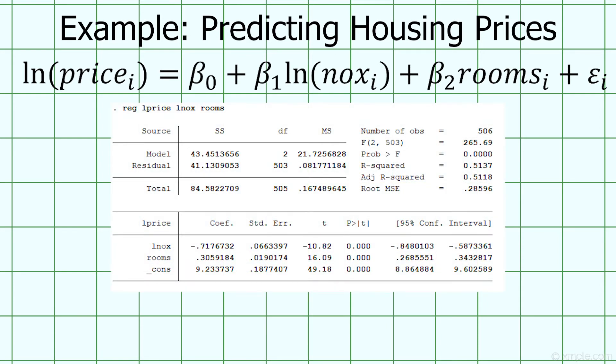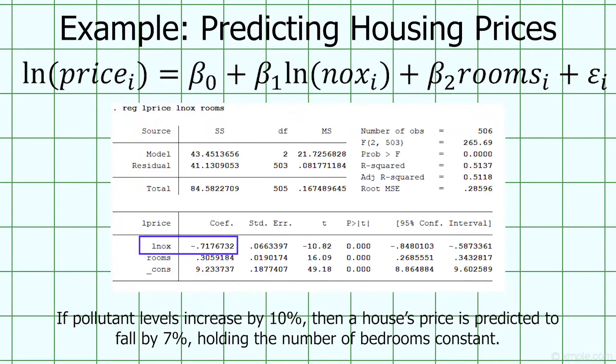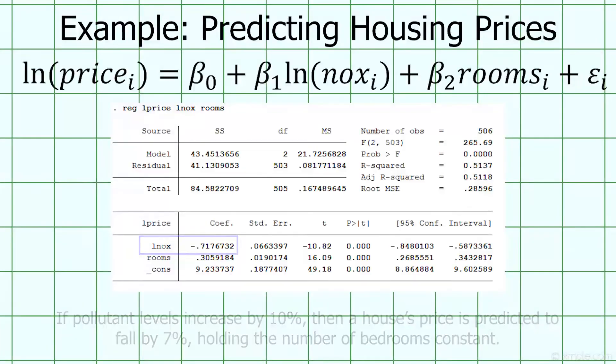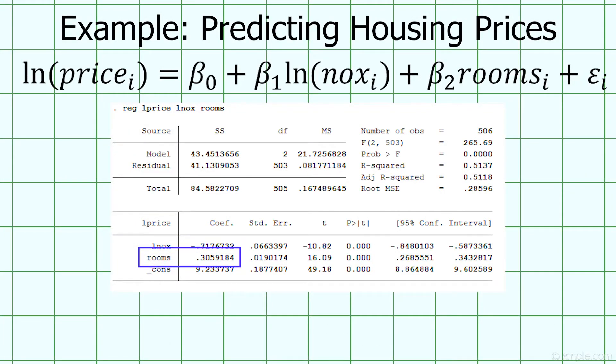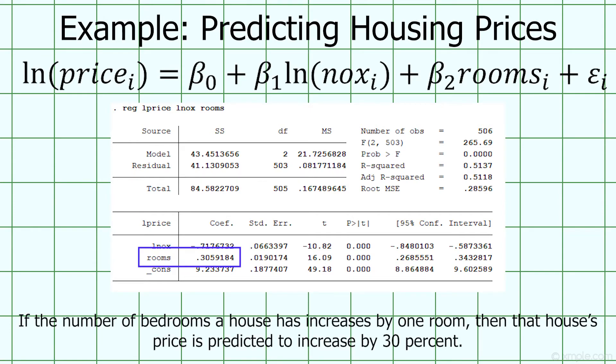Now, how can we interpret each coefficient? Well, recalling that our dependent variable is the natural log of price, then this coefficient tells us that if pollutant levels increase by 10%, then a house's price should decrease by 7.1%, holding the number of bedrooms a house has constant. This coefficient, on the other hand, tells us that adding one additional bedroom increases a house's price by 30.6%, holding pollution levels constant.